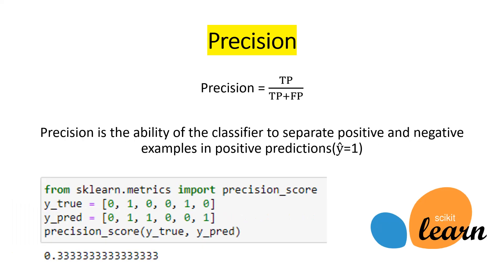Then we have precision. Precision is the ability of the classifier to separate positive and negative examples among positive predictions. Unlike recall and specificity where we fix y, here we fix y-hat equals one and assess the classifier's ability to separate positive and negative examples. Precision is calculated as the True Positive divided by the True Positive plus the False Positive. We can also use scikit-learn to import the precision score and compare true values with predicted values.